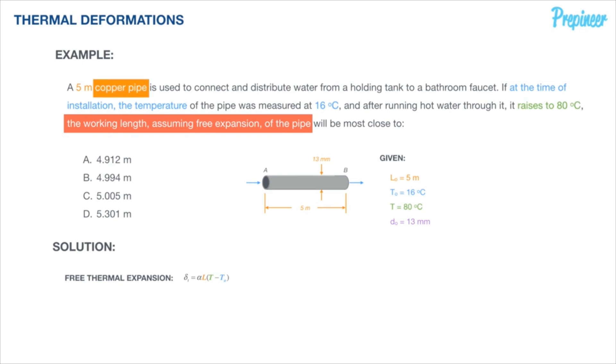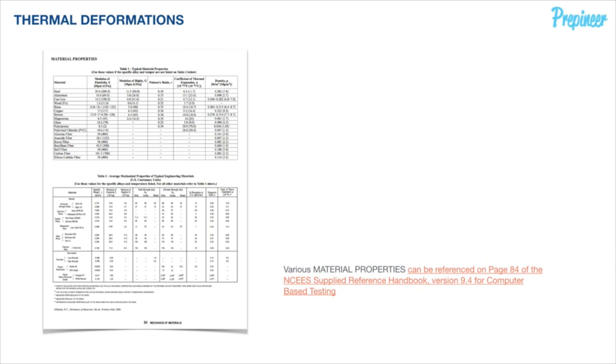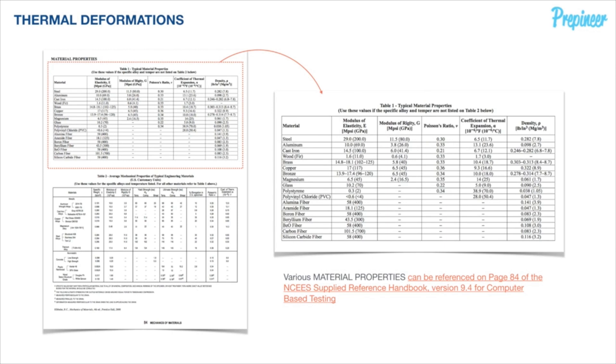Hopping back to our tables on page 84 of the NCEES Reference Handbook and honing in on this upper table of material properties, we will be pulling our coefficient from the fifth column. Knowing that we are working with a copper pipe, we reference this line and find that the coefficient of thermal expansion will be 9.3 times 10 to the negative 6 per degree Fahrenheit or 16.6 times 10 to the negative 6 per degree Celsius. So which one are we going to use?